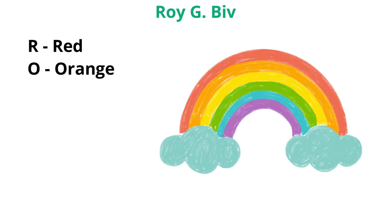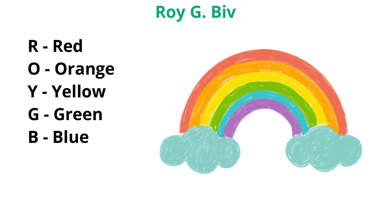By the way, do you know the order of the colors in a rainbow? Just remember this person's name: Roy G. Biv. Red, orange, yellow, green, blue, indigo, violet.